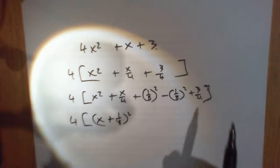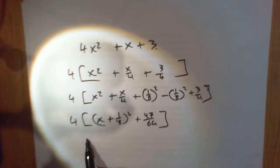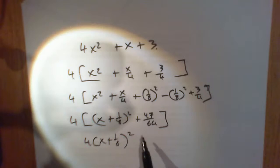Get a calculator on this one. I am coming out at 47 over 64. Multiply the 4 in. 4 into that is 47 over 16. And find your minimum point then: minus 1 over 8, 47 over 16.